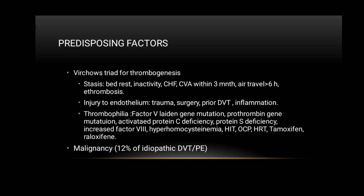Factor V Leiden gene mutation, prothrombin gene mutation, activated protein C deficiency, protein S deficiency, increased factor VIII, hyperhomocysteinemia, heparin-induced thrombocytopenia, oral contraceptive pills, hormone replacement therapy, tamoxifen, and raloxifene contribute to thrombophilia. Stasis, injury to endothelium, and thrombophilia are Virchow's triad that lead to thrombogenesis and cause pulmonary embolism. Malignancy causes 12% of idiopathic deep vein thrombosis and pulmonary embolism.